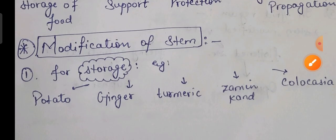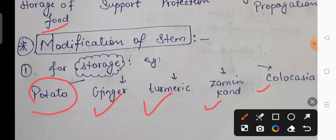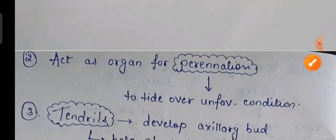Now, modifications of the stem. For storage of food, the stem is modified in potato, ginger, turmeric, zaminkand, and colocasia. In all these, the stem is modified and acts as a storage organ. They also act as organs of perennation — helping the plant to tide over and overcome unfavorable conditions during the period of perennation.